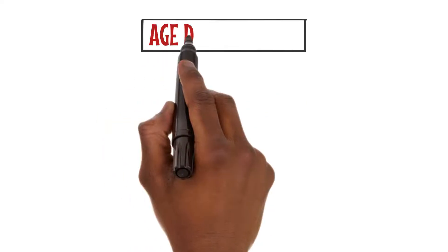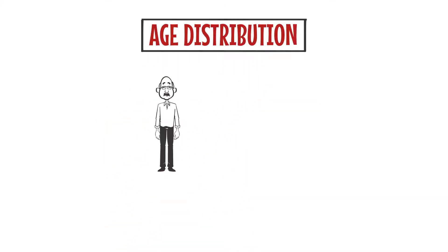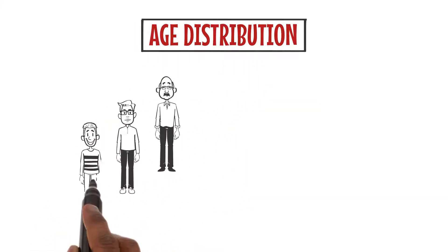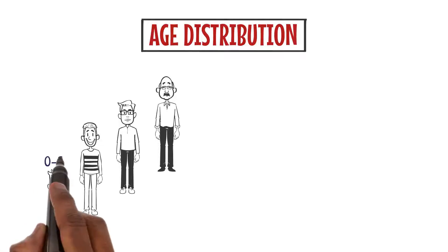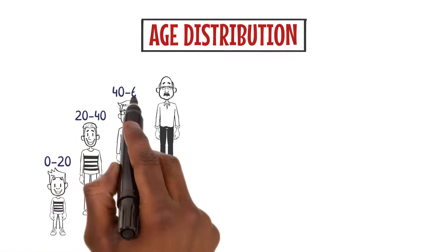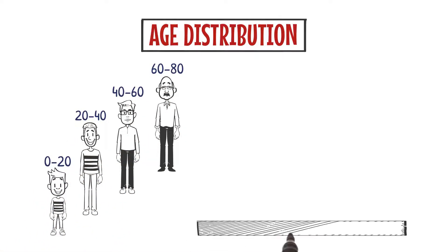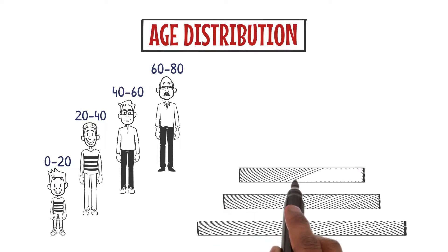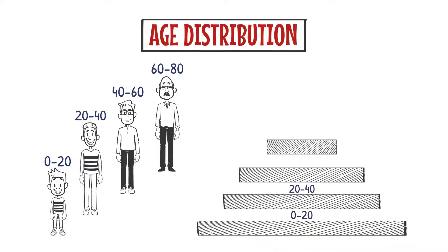Now let's talk about the age distribution within our population. Just like a pyramid, the distribution represents the number of individuals in different age groups. For example, a large number of young people would result in a pyramid-shaped graph.